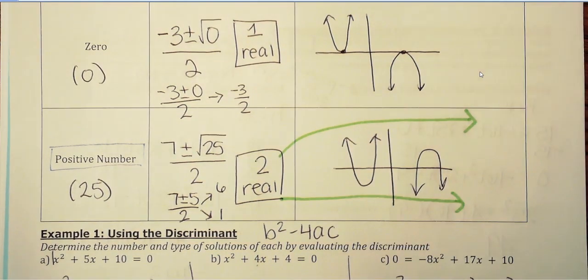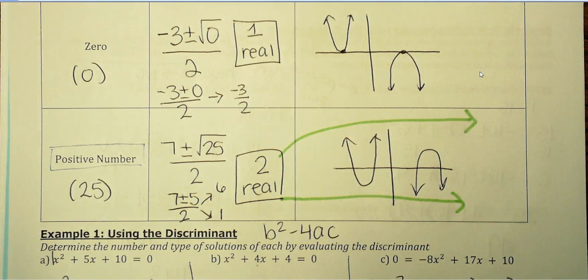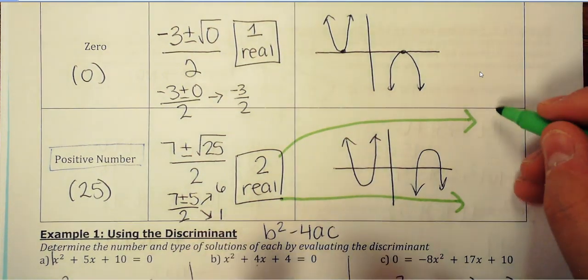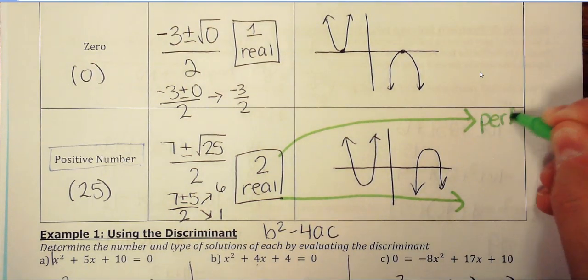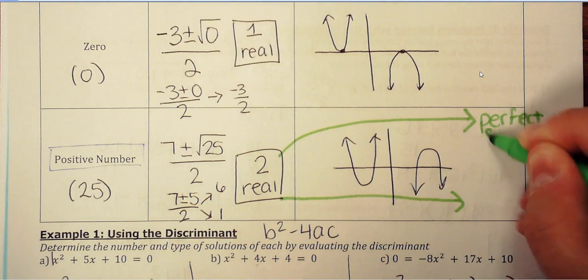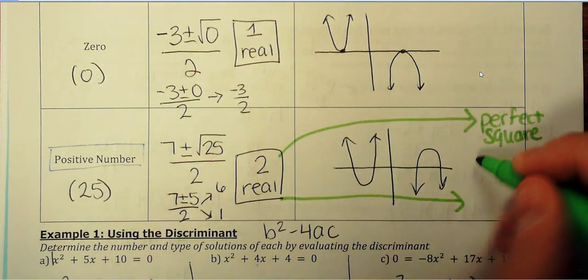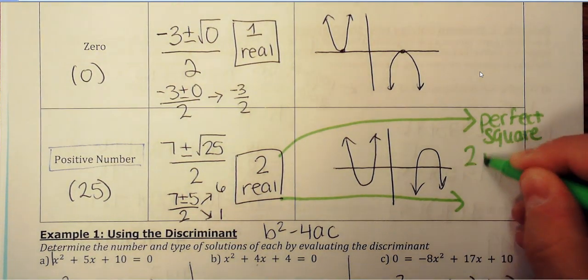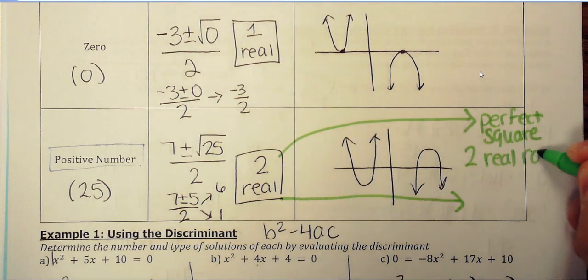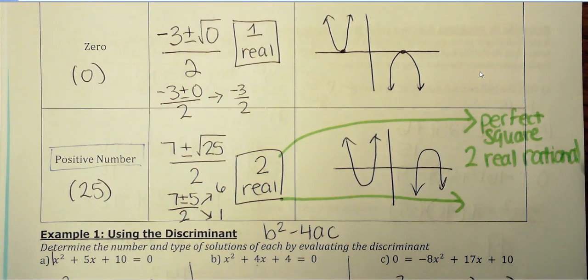Now, to help answer the homework questions, if the number, like in my example, is a perfect square, so it has a nice square root, like 25, 49, or 36—perfect squares—